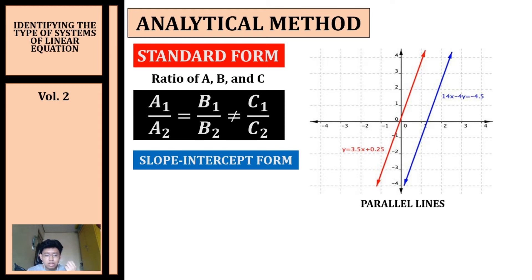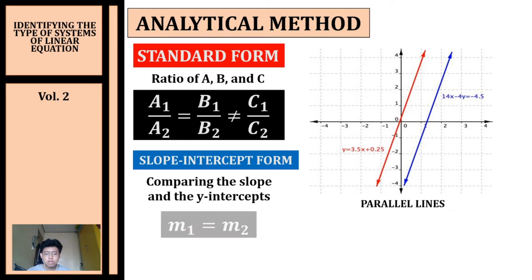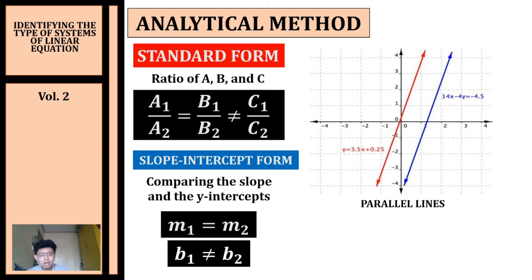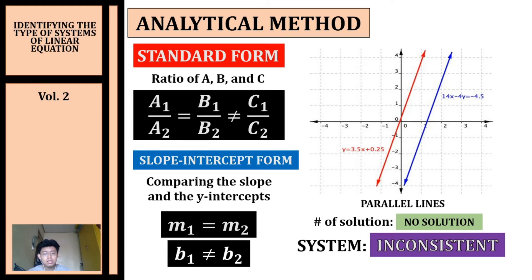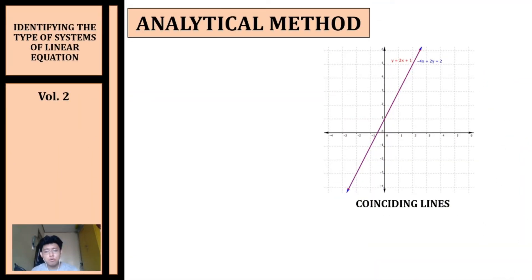If the equations are written in slope-intercept form, we compare the slopes and y-intercepts. If the slope of line one is equal to the slope of line two, and their intercepts are not equal, then we can conclude that we will have parallel lines. The number of solutions for parallel lines is no solution, because we don't have any point of intersection. This type of system is classified as an inconsistent system.